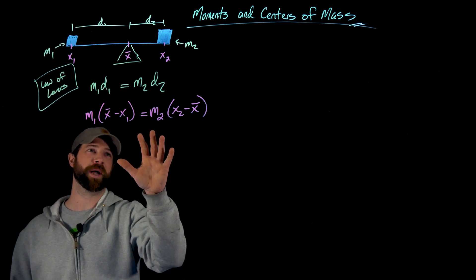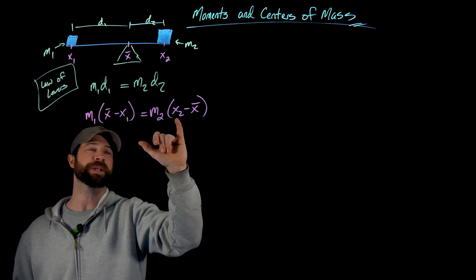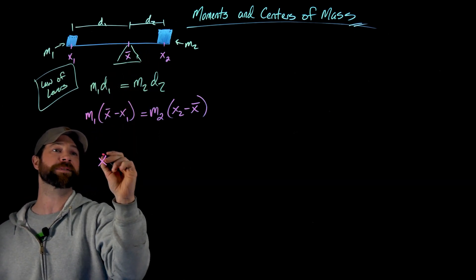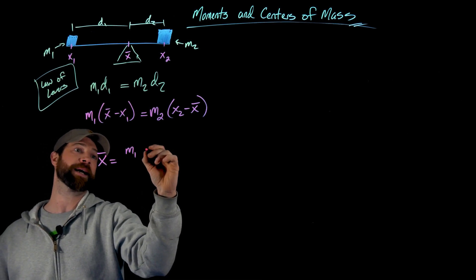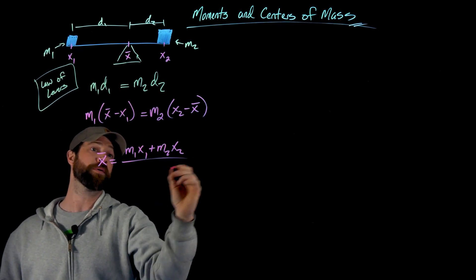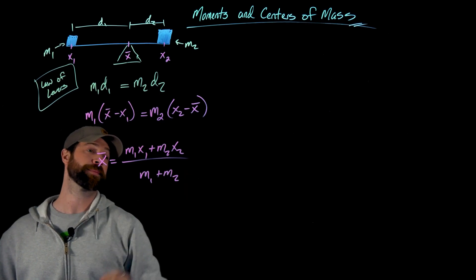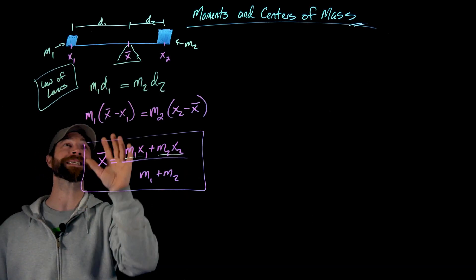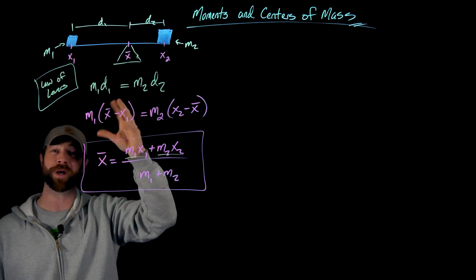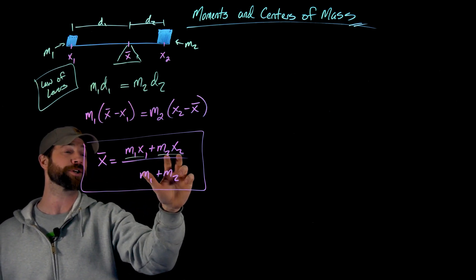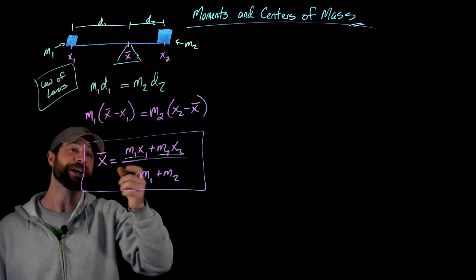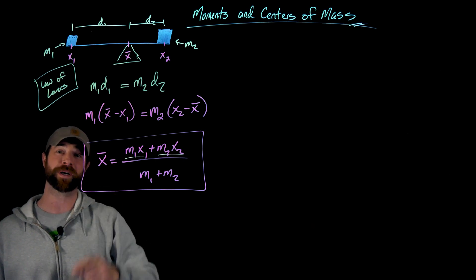Without showing all the algebra — distributing these mass values and solving for x-bar — we find that x-bar equals (m1 times x1 plus m2 times x2) divided by (m1 plus m2). So x-bar gives us the center of mass, or the fulcrum point, thinking of the law of levers. These terms have special names: when you multiply the mass times the position of each mass, those are called the moments of those masses.